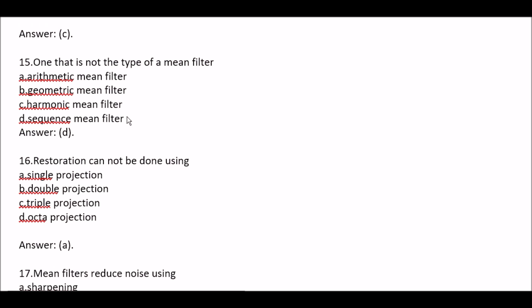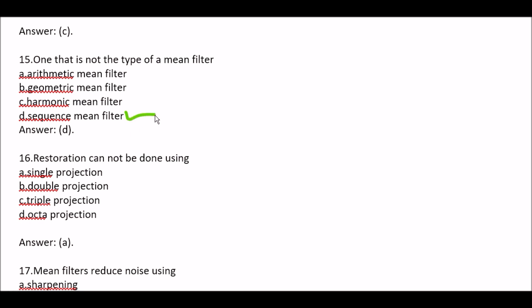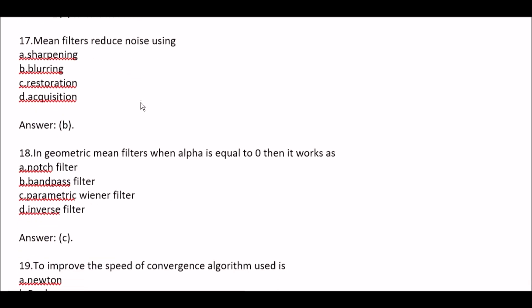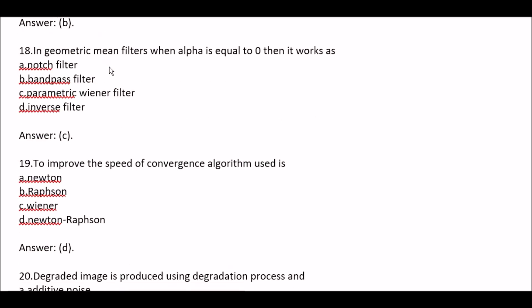Question 15: One that is not the type of a mean filter — Option A Automatic mean filter, Option B Geometric mean filter, Option C Harmonic mean filter, Option D Sequence mean filter. Right option is Option D, Sequence mean filter. Question 16: Restoration can be — Option A Single projection, Option C Double projection, Option C Triple projection, Option D Octa projection. Right option is Option A, Single projection. Question 17: Mean filters reduce noise using — Option A Sharpening, Option B Blurring, Option C Restoration, Option D Acquisition. Right option is Option B, Blurring. Question 18: In Geometric mean filters, when alpha is equal to zero, then it works as — Option A Notch filter, Option B Band pass filter, Option C Parametric Wiener filter, Option D Inverse filter. Right option is Option C, Parametric Wiener filter.